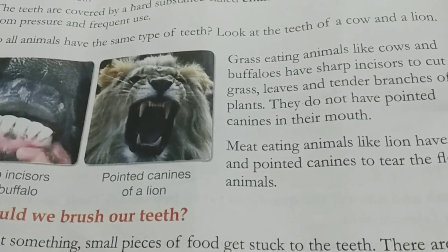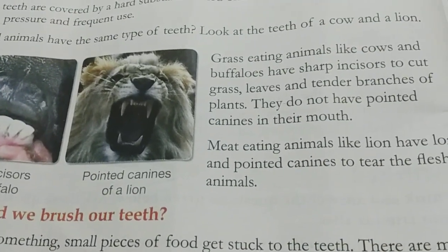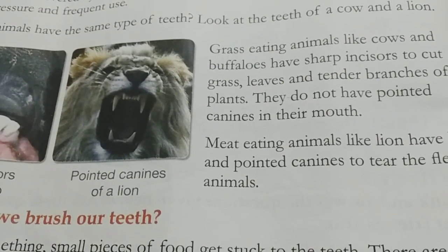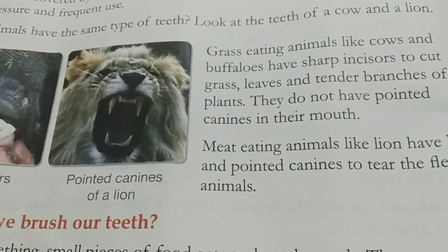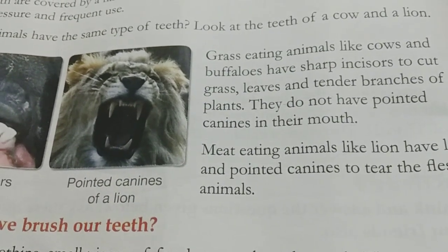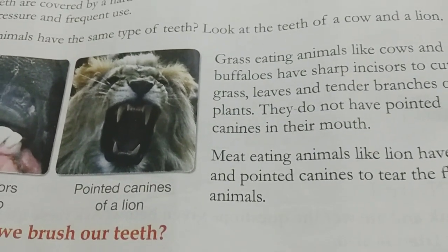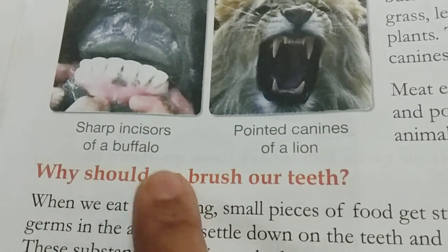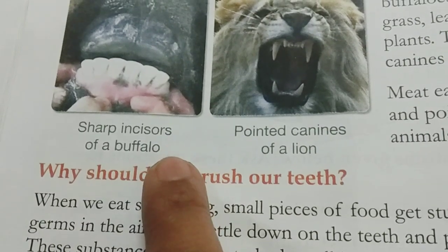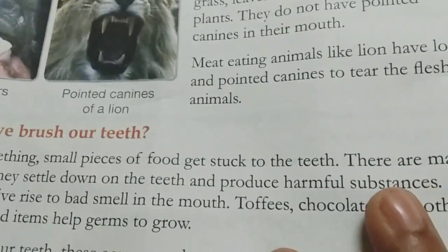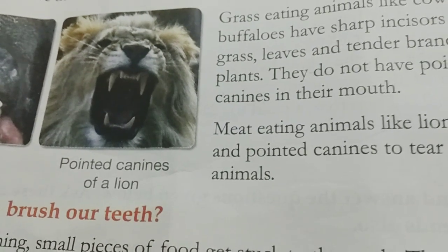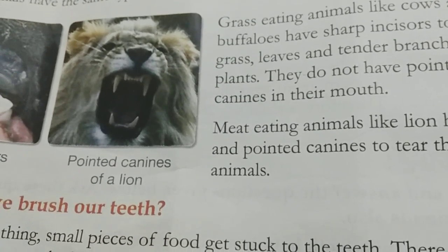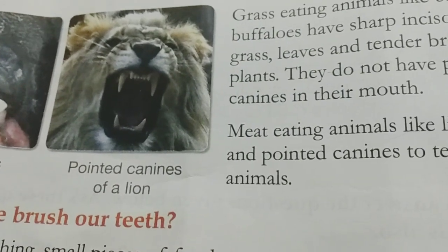Plant-eating animals have sharp incisors to cut grass and leaves. Their canines are either absent or small on both sides. You can see the picture — sharp incisors of a buffalo. Flesh-eating animals have long, pointed canines to tear flesh. See the pointed canines of a lion.